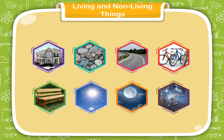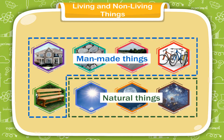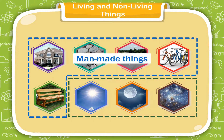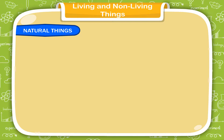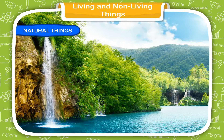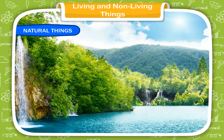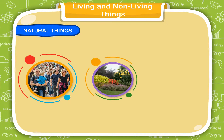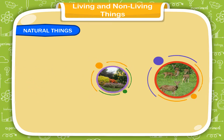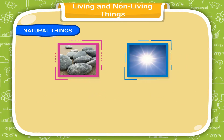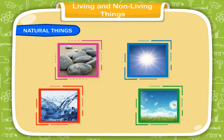Some of the non-living things are natural things while others are made by humans and are called man-made things. Nature provides us many things which are either living or non-living things. Humans, plants and animals are living things. Stones, the sun, water, air, etc. are non-living things.